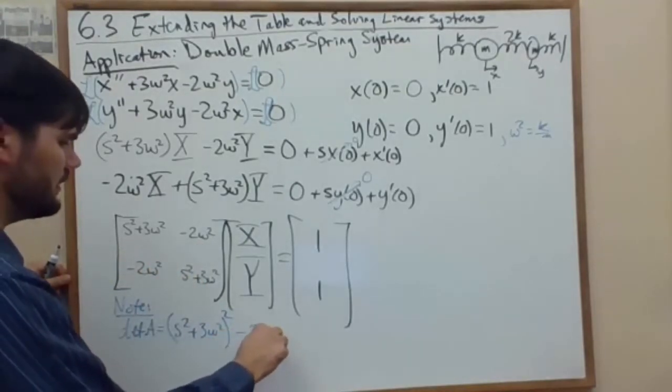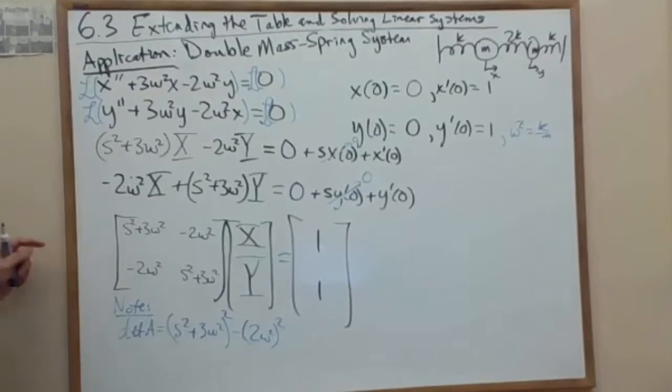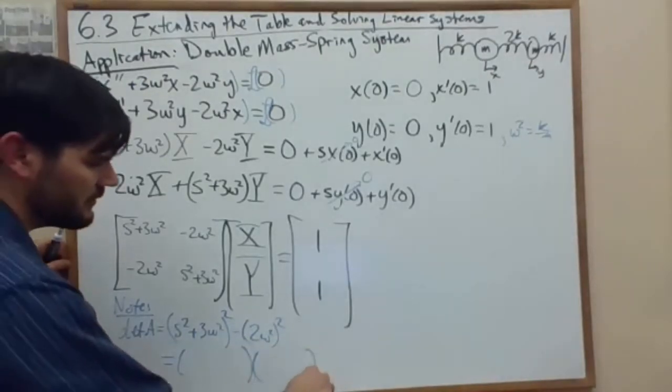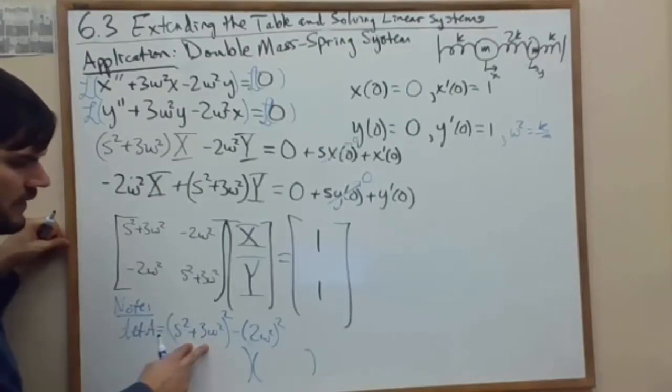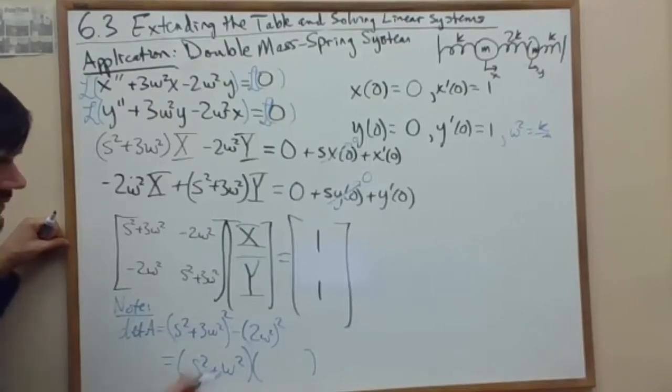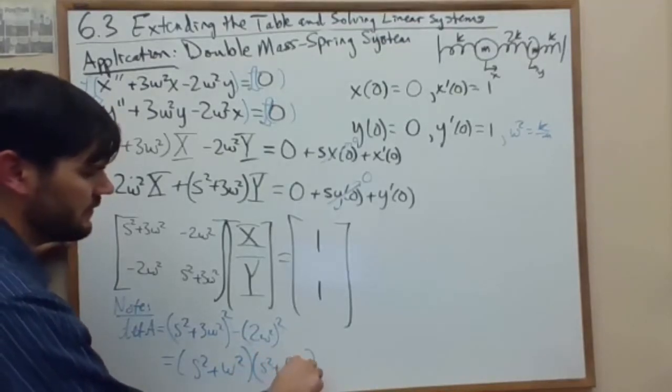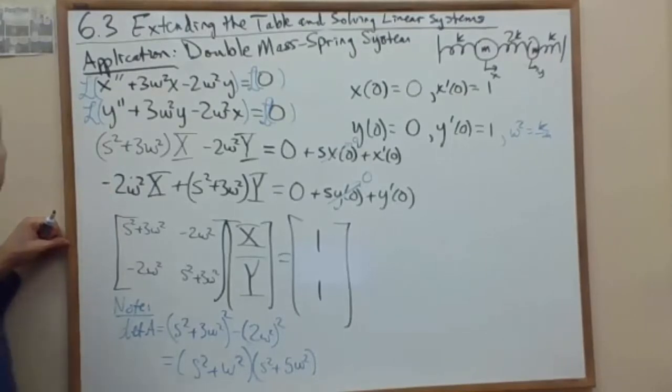We get s squared plus 3 omega squared times itself minus this product, so minus 2 omega squared quantity squared. Now, since it's the difference of squares, we can factor it as a product of two pieces. We first take the difference: s squared plus 3 omega squared minus 2 omega squared is s squared plus omega squared. Notice that's a nice s squared plus b squared, right? We have one of our cosine pieces. And the other piece is when I add the two, and that's s squared plus 5 omega squared. Again, we have a nice s squared plus some b squared where b is the square root of 5 times omega.